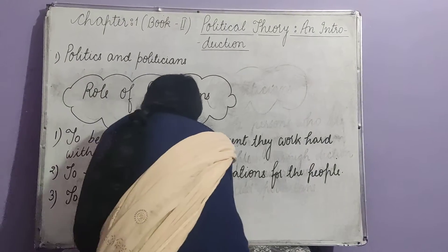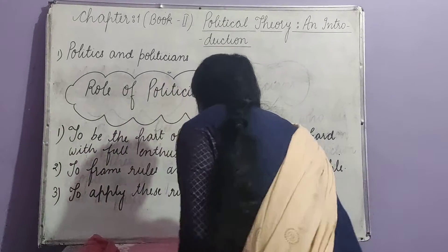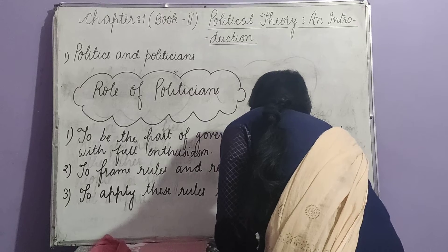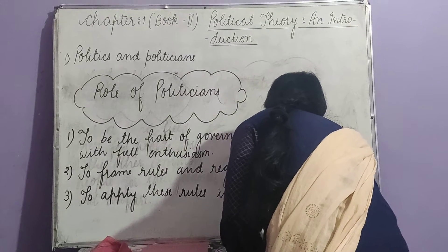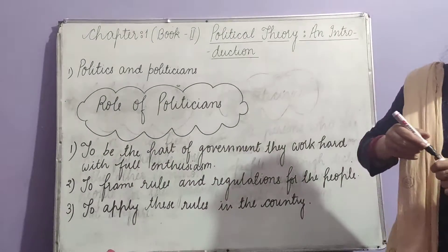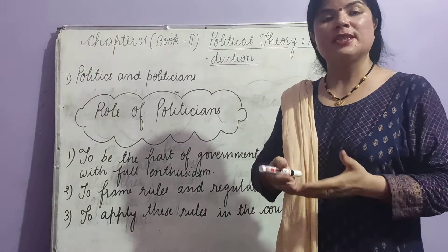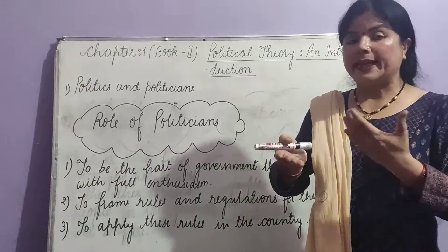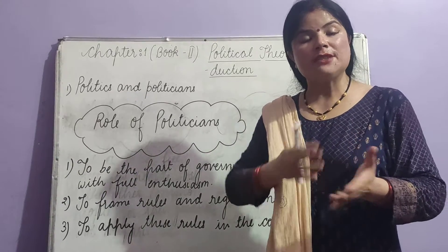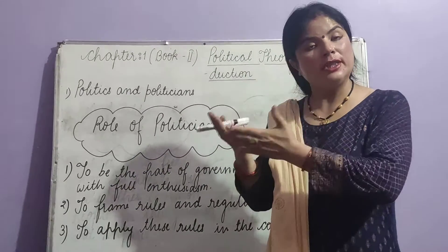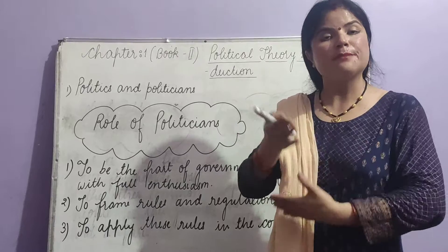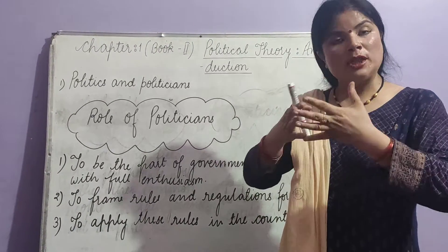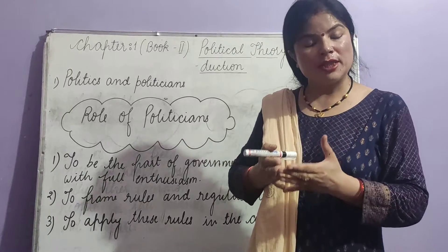Third role: to apply these rules in the country. The politicians who become part of the executive have the responsibility for the implementation of all rules and regulations framed by the legislature, so that all the people can have these rules and regulations applied equally.